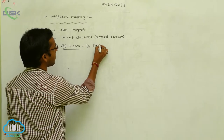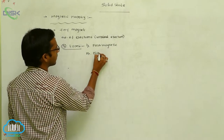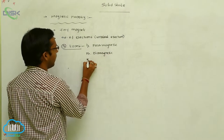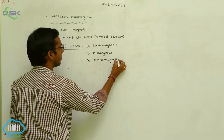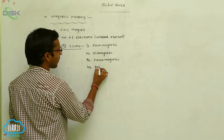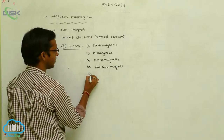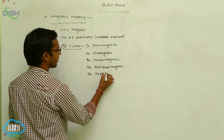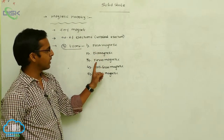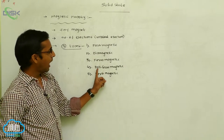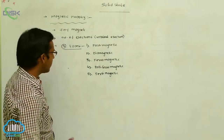The five types of magnetic properties are: paramagnetic, diamagnetic, ferromagnetic, anti-ferromagnetic, and ferrimagnetic property.